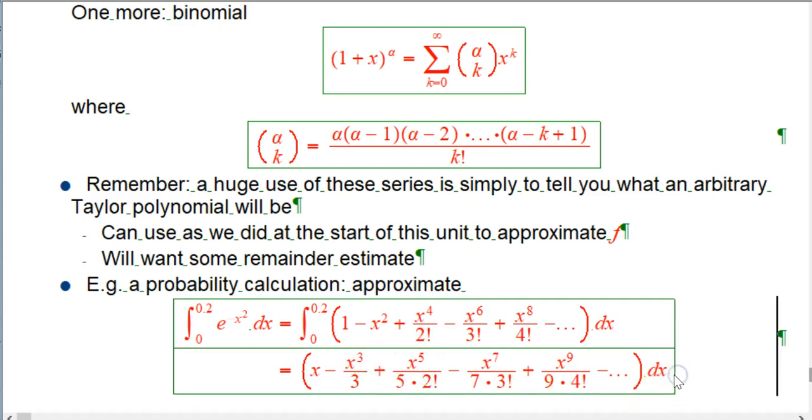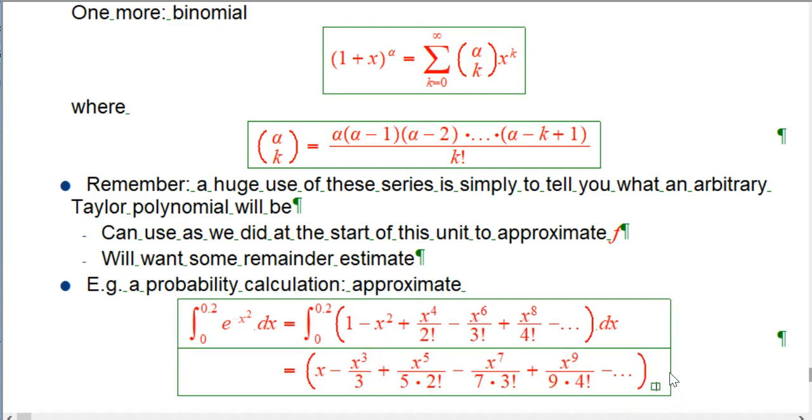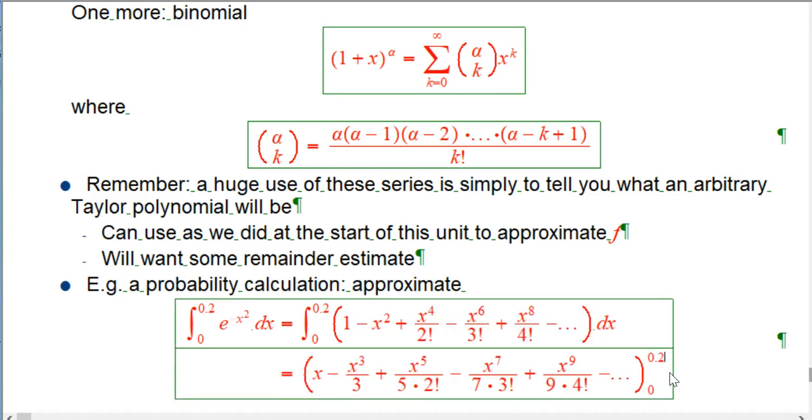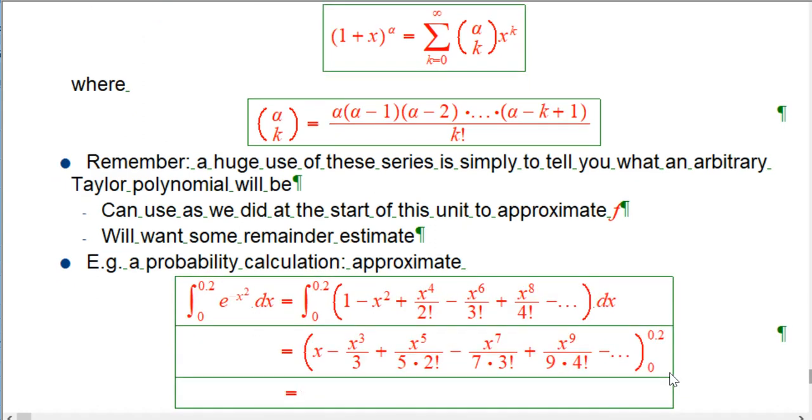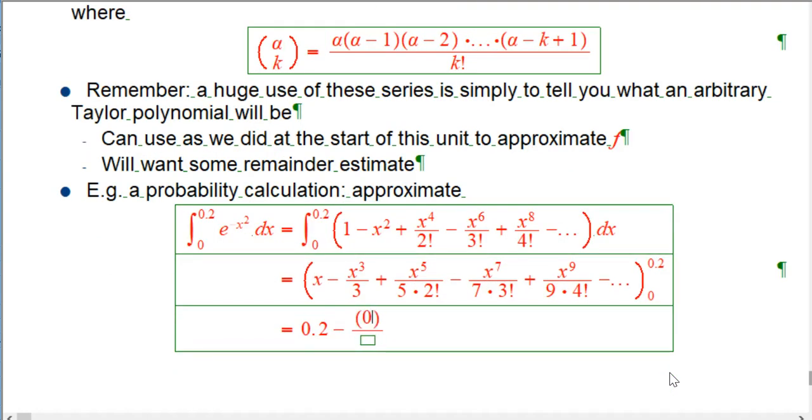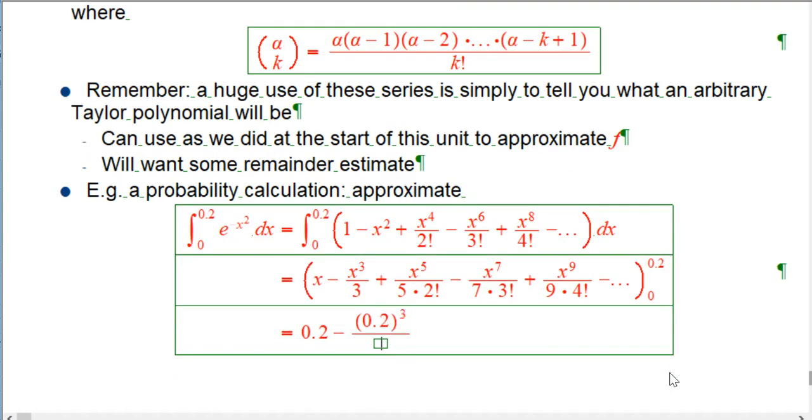So let's just integrate that term by term. That's going to be x minus x cubed over 3 plus x fifth over 5 times 2 factorial minus x to the 7 over 7 times 3 factorial plus x to the 9 over 9 times 4 factorial. And we'll see if we need any more. And that's evaluated from 0 to 0.2. And then the 0 doesn't do anything, so you just get 0.2 minus 0.2 cubed over 3 plus. And we want to approximate this to within 10 to the minus 7.